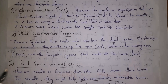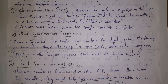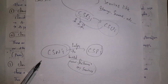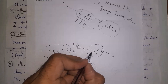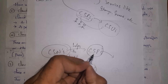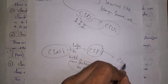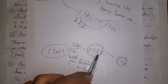The third player is cloud service partners, shortly called CSPs. These are people or companies that help cloud service providers improve their cloud services — for example, by helping to build new features or add extra services. Cloud service partners help cloud service providers build new features, and those providers then deliver services to cloud service users. These are the three main players in the cloud ecosystem.